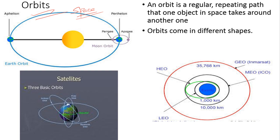First of all you need to know what is the meaning of an orbit. In layman terms, an orbit means a path — it is a path which is taken by a satellite. The satellite may be man-made or natural, and the path which is taken by the satellite is called an orbit. The definition from the NASA website states: an orbit is a regular, repeating path that one object in space takes around another one.